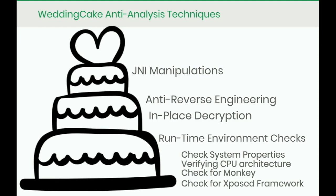What makes Wedding Cake so interesting? Previously in Android, anti-analysis techniques were generally still in Java, because that's what malware developers were already using and it has a lower point of entry than compiled C or C++. The first notable thing is that all of this is in native code. We'll start with JNI or Java Native Interface manipulations, then anti-reversing techniques, in-place decryption, and finally about 40 different runtime environment checks. None of these in and of themselves are super novel, but embedding each one within the other is what made it so complex.